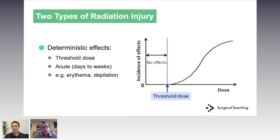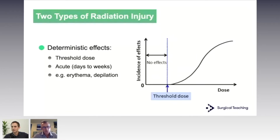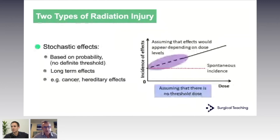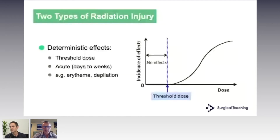These short-term effects are due to things like radiation burns or cataract formation. For these types of effects there is actually a threshold below which you have no effect — no skin damage or burning. Once you reach that threshold, you start to get an effect, and to a very similar degree across individuals. These are called deterministic effects. The graph shows nothing happening below the threshold, then a rise roughly proportionate to the dose.